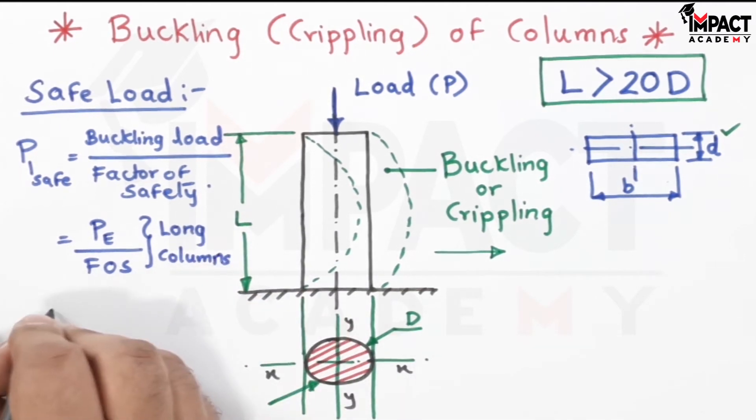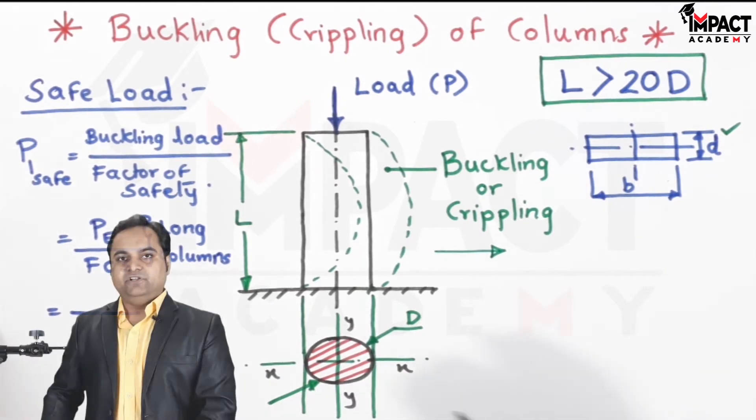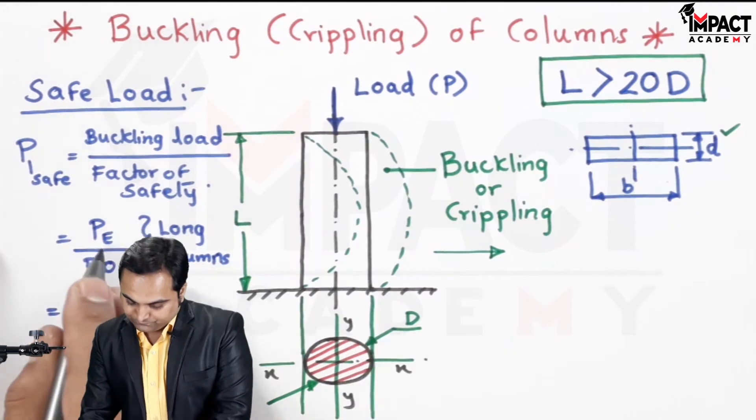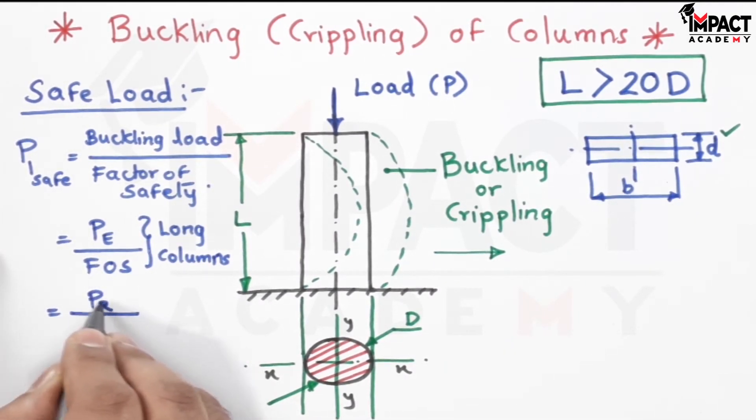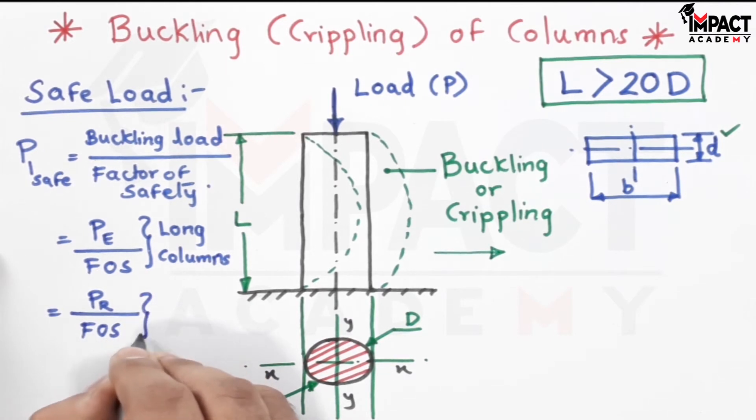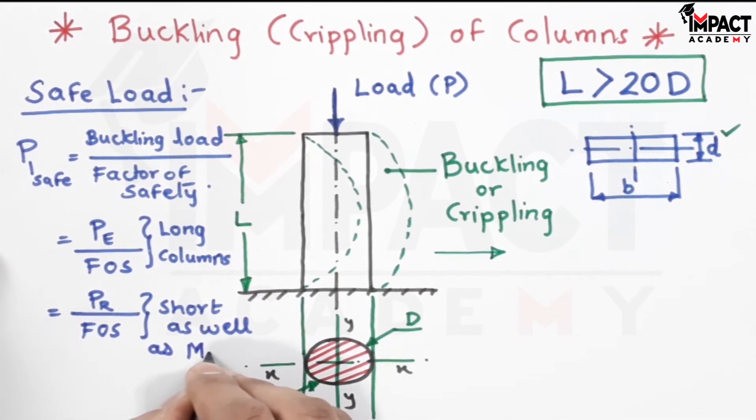Because Euler's theory is preferred for long columns, the formula has been derived by taking the length of the column more than 20 times the diameter. And it can be written in this form as well: that is Rankine's P_r, crippling load upon FOS. This is used for short as well as medium length of columns.